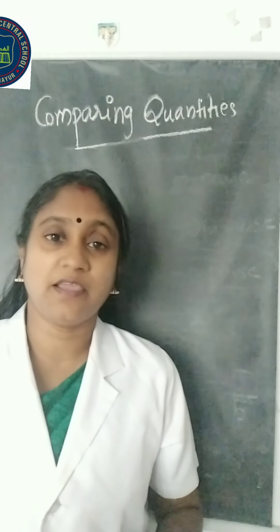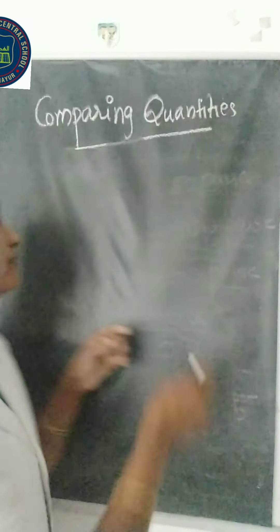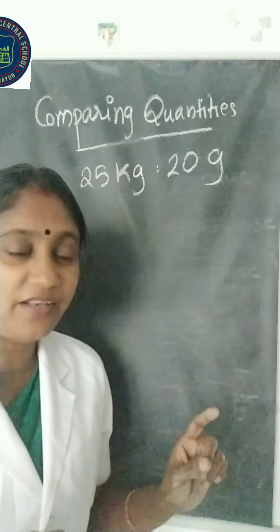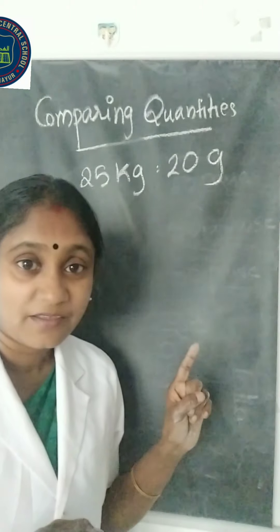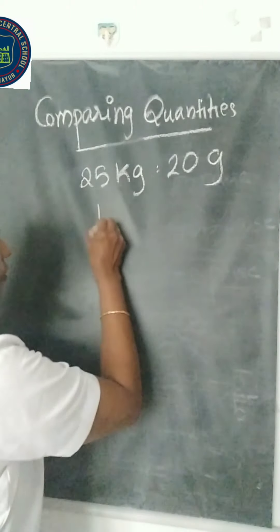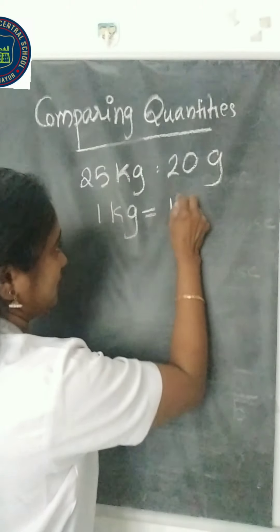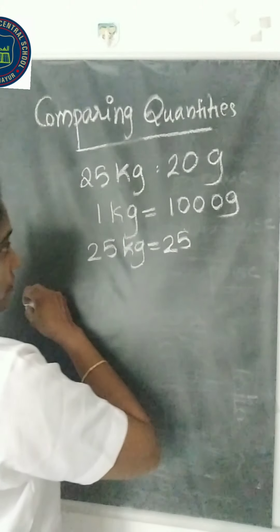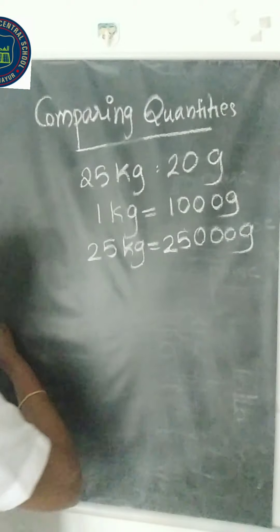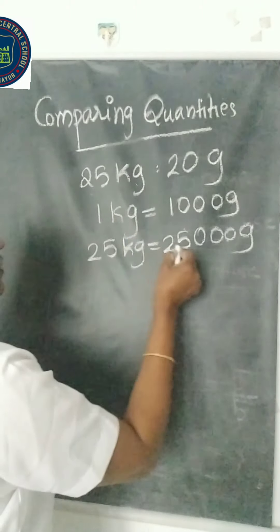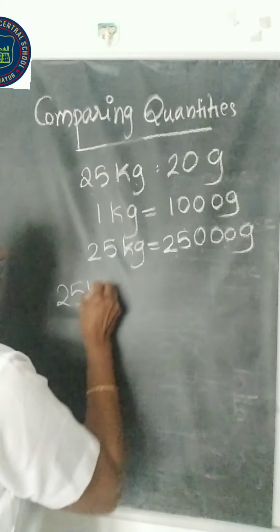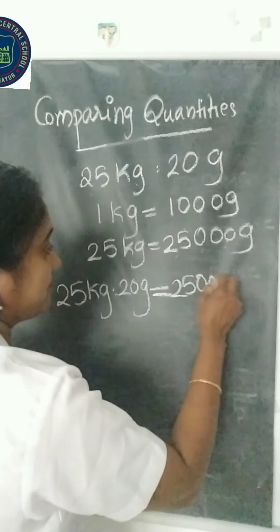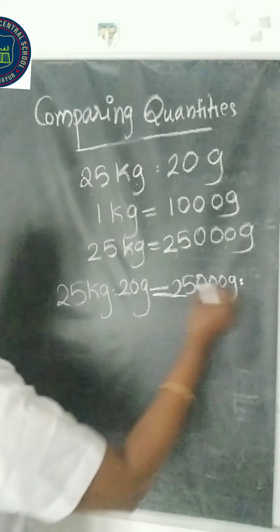Next question: compare 25 kg and 20 grams. We know the relation between kilogram and gram: 1 kg equals 1000 grams. Therefore 25 kg equals 25 multiplied by 1000, which is 25,000 grams. So the question becomes: 25,000 grams is to 20 grams.